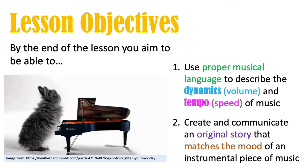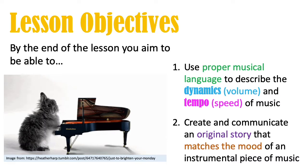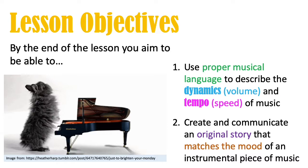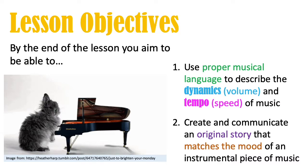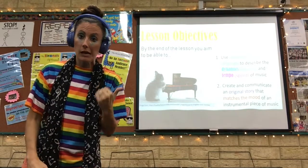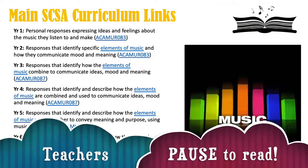By the end of this lesson, these are the things we want you to be able to achieve. Number one: use proper musical language to describe dynamics, which means volume, and tempo, which means speed of music. And number two: create and communicate an original story that matches the mood of an instrumental piece of music. Now we'll have a quick look at the teacher info and then we'll get on to the fun stuff.